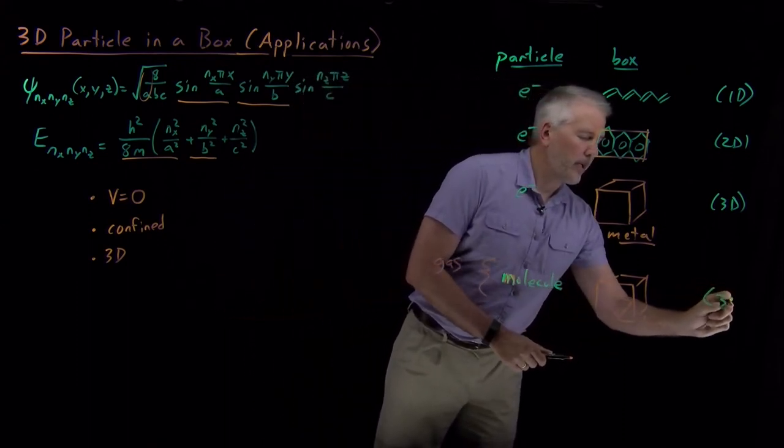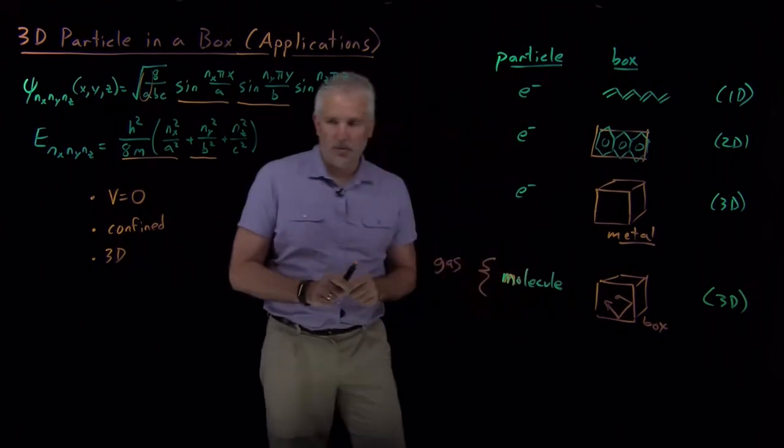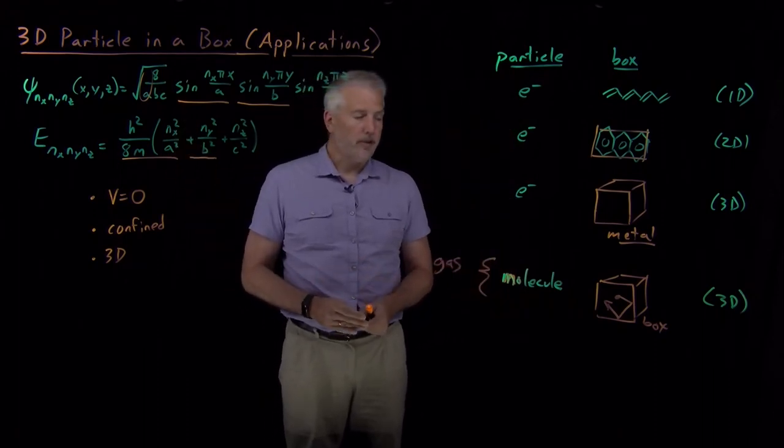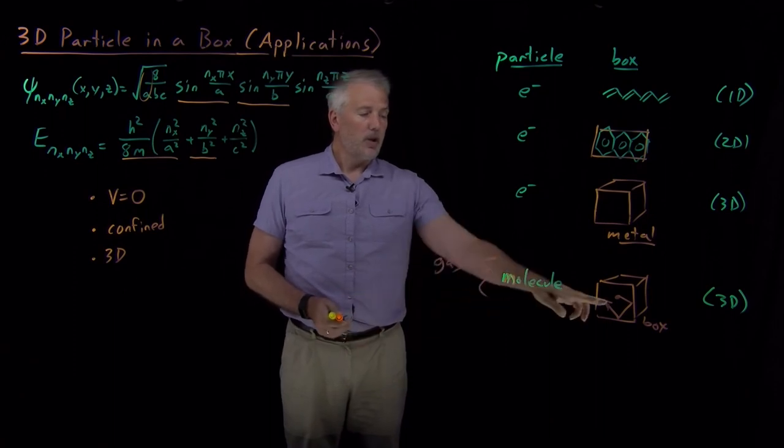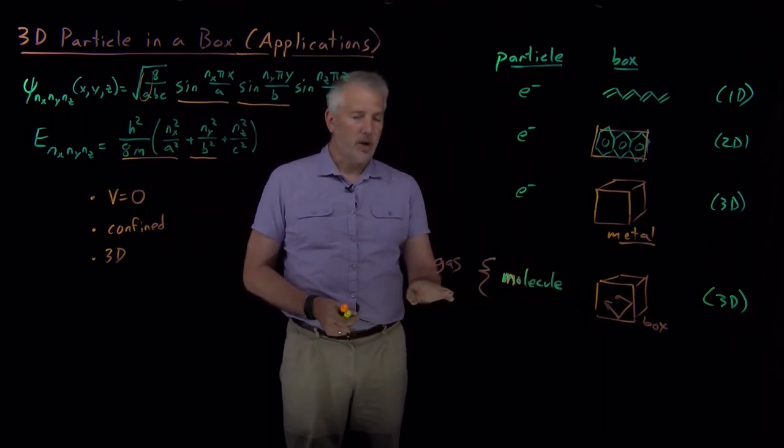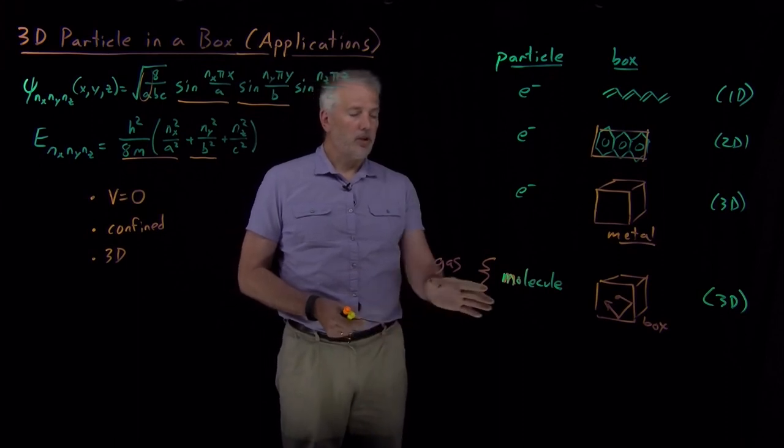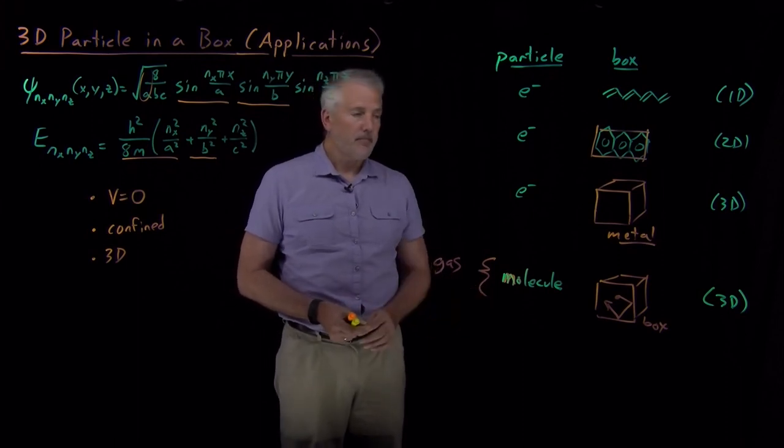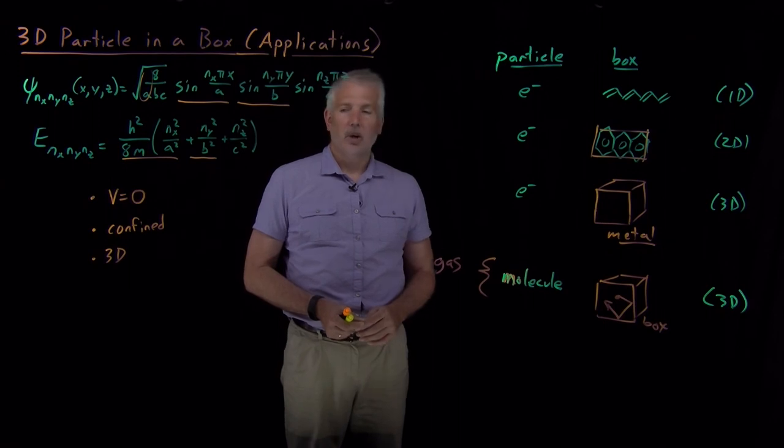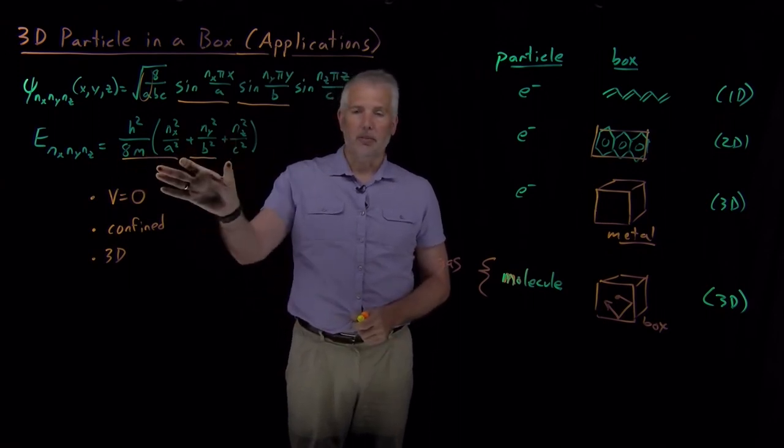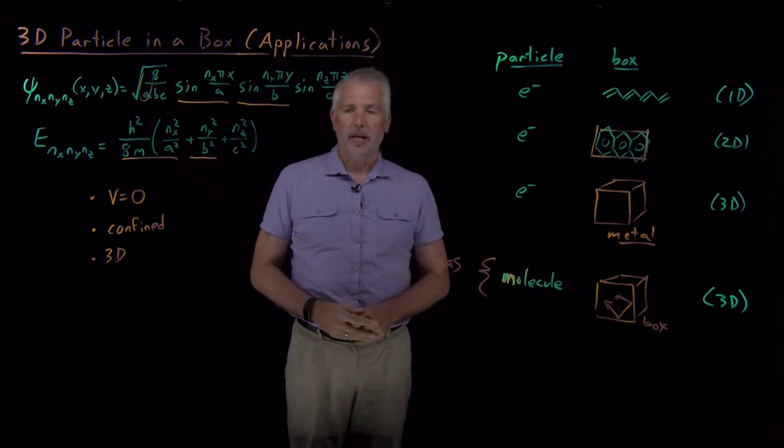And this would be another 3D example for which we could use the particle-in-a-box energy levels and the particle-in-a-box wave functions to describe how that system behaves. So it turns out we're going to get quite a lot of knowledge out of using the 3D particle-in-a-box model to describe how gases behave. But before we move on and do that, we're going to say one more thing about the energy levels for the 3D particle-in-a-box that we'll need to understand how we use it for gases.